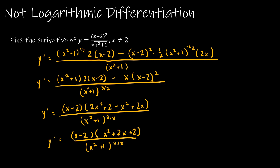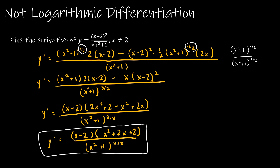Before we continue, I just wanted to show the work for that same question without using logarithmic differentiation. As you can see, it's still quite a bit of work and there are a lot of places to make mistakes. Many students get stuck when dealing with x squared plus 1 to the one-half and x squared plus 1 to the negative one-half simultaneously. So it might be easier to use logarithmic differentiation — it's just one more strategy. Going through all the work, I did end up at the same answer either way.